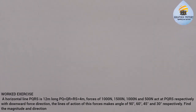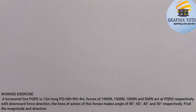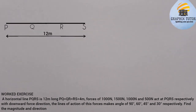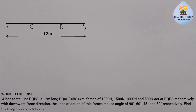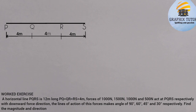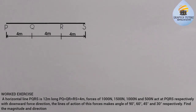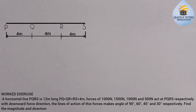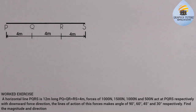First, let us draw the free body diagram. The line PQRX is 12 meters long. The important part is that PQ = QR = RX = 4 meters, so the distance between each point is 4 meters. Each of the forces — 1000 N, 1500 N, 1000 N, and 500 N — acts on those points P, Q, R, X. All the forces are acting downward.